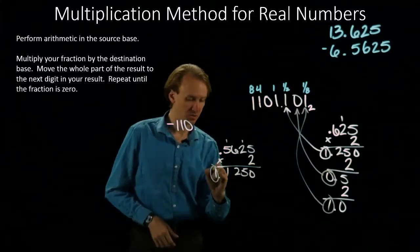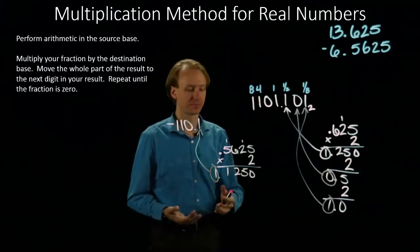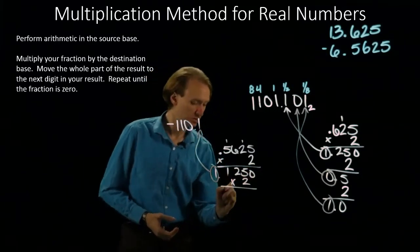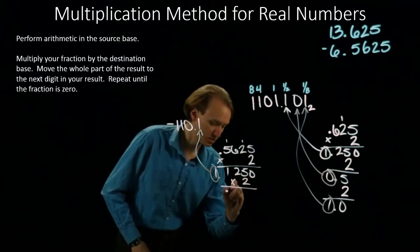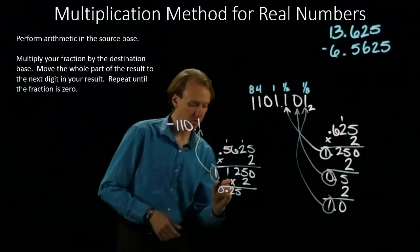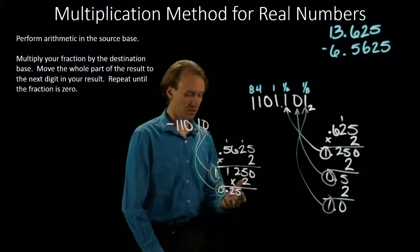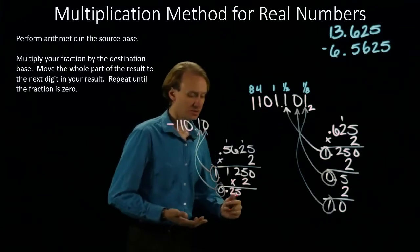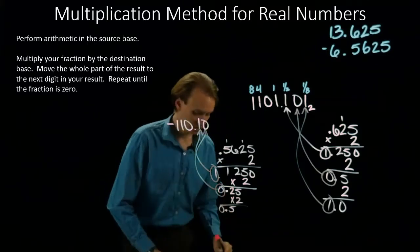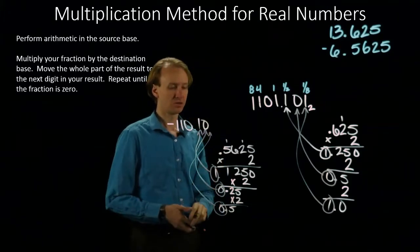So, I will take this one and move it up here as the next bit in my binary number. And then I will multiply whatever's left by 2. 0.125 times 2 is 0.25. So, I have a 0. And I would take this 0 and move it up here. That will give me 0.5. So, I will take this 0 and move it up here as my third bit in the fraction.